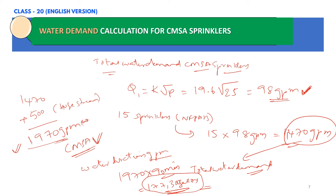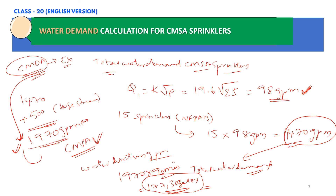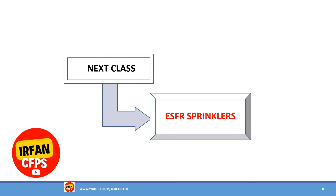If you want to consider CMDA sprinklers, you can watch my previous video, where we took the same storage warehouse example and calculated the water demand. You can compare the water demand for CMDA sprinklers versus CMSA sprinklers to determine which is the most cost-effective option for your warehouse project. In the next class, we will consider ESFR sprinklers for the same storage warehouse and calculate the water demand. Till then, bye.